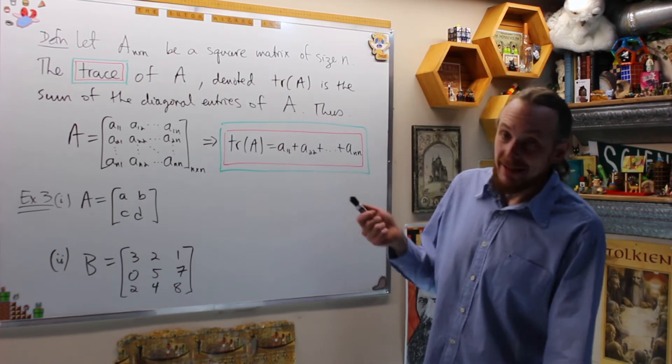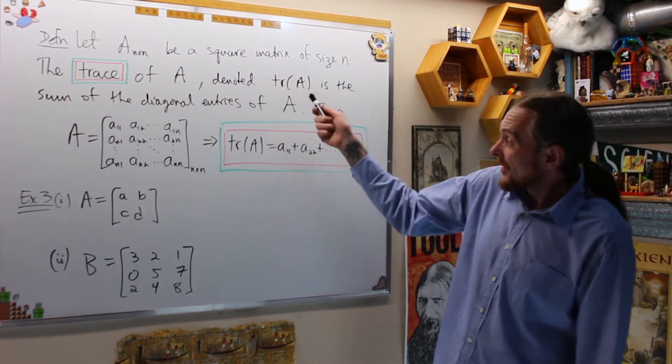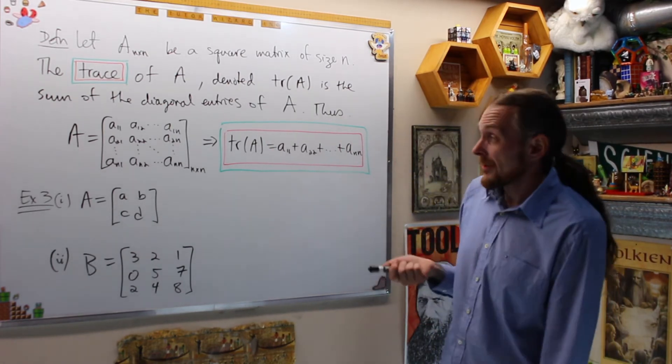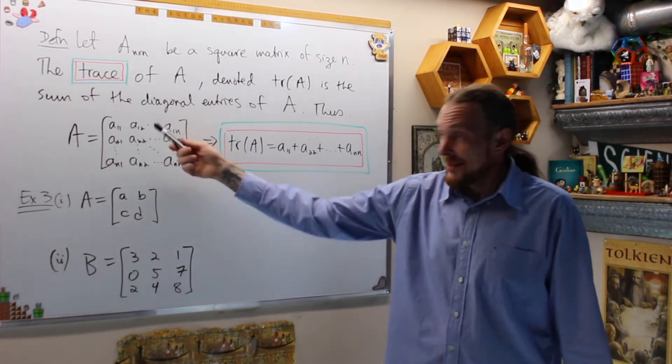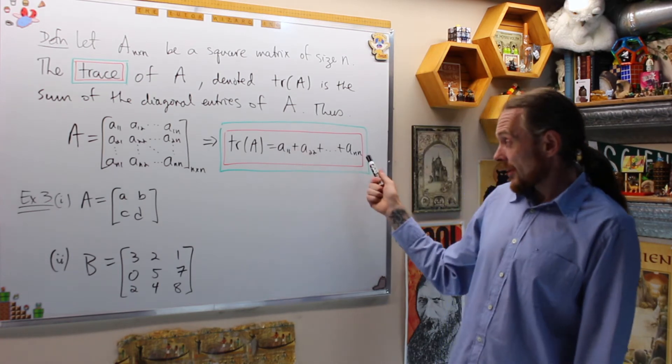Let A by N be a square matrix, then the trace of A denoted TR of A is the sum of all the diagonal entries of that matrix. Therefore, if we denote our matrix by this guy, then the trace is a11 plus a22 plus dot dot dot ann.